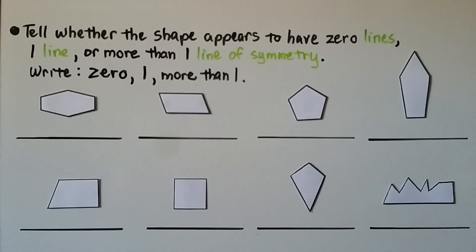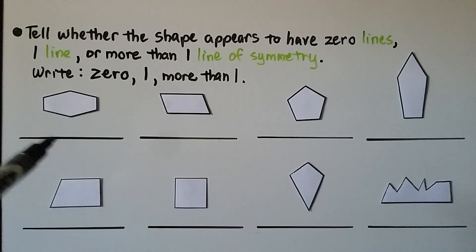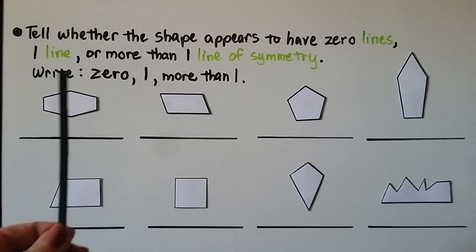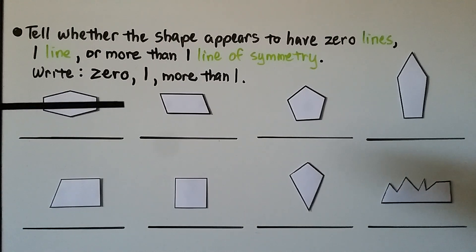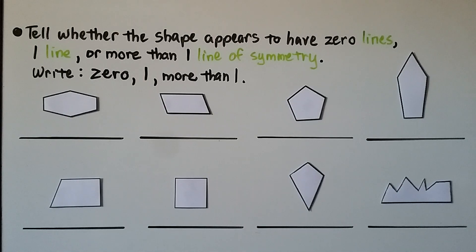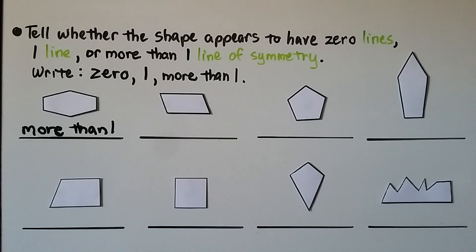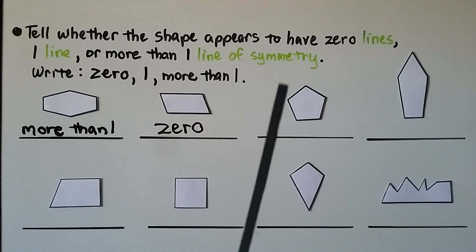Now we need to write whether each shape has zero, one, or more than one line of symmetry. The first figure has a line of symmetry vertically and horizontally, so that's more than one. A parallelogram has zero lines of symmetry. A regular pentagon has five equal sides and five equal angles, so it has five lines of symmetry — more than one.